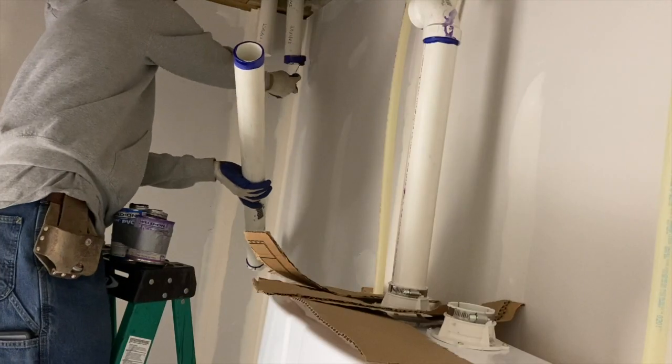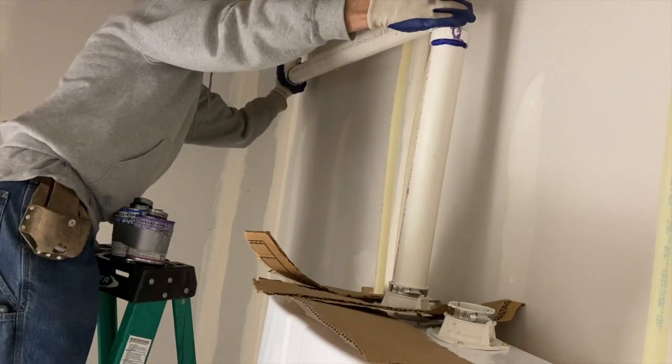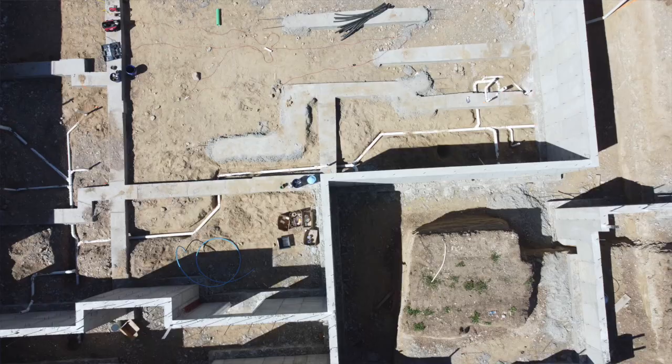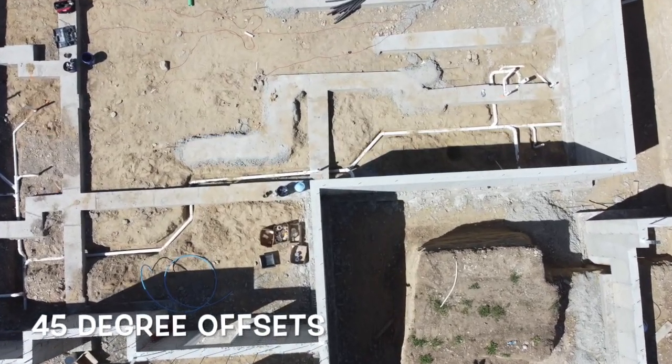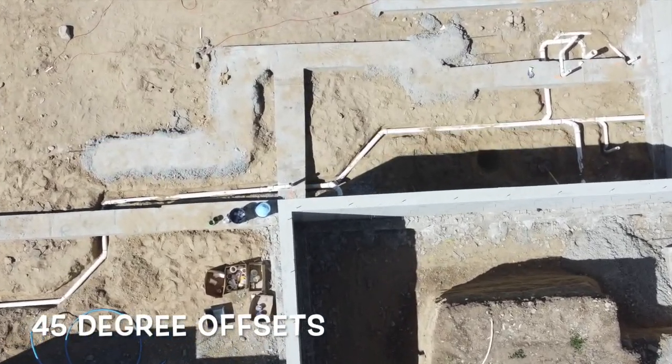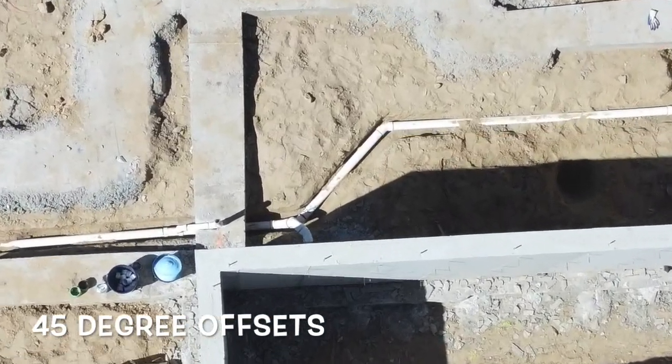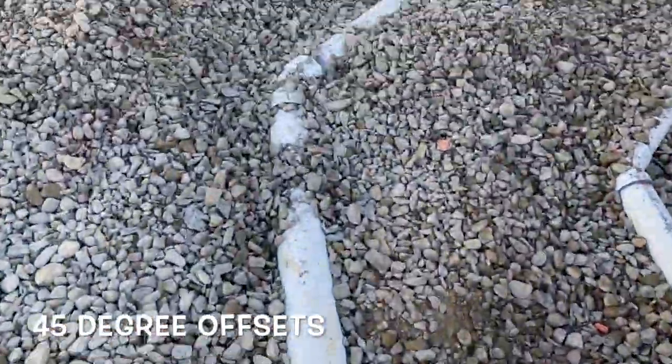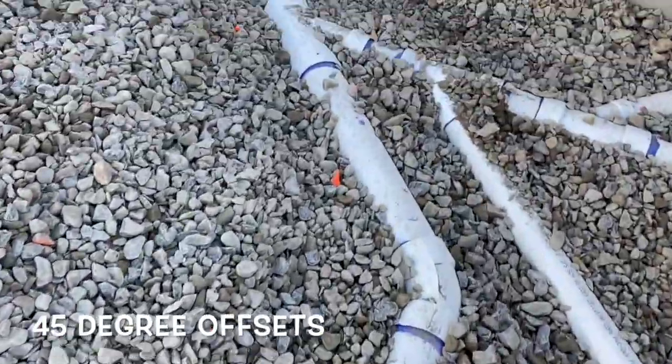Offsets can be created using 90 degree fittings or 45 degree or even other angle fittings, so long as both fittings are the same degree angle and that will bring that line back in parallel. Most commonly, offsets are calculated using 45 degree fittings, so let's see how we do that.